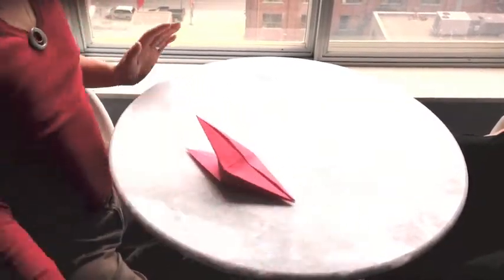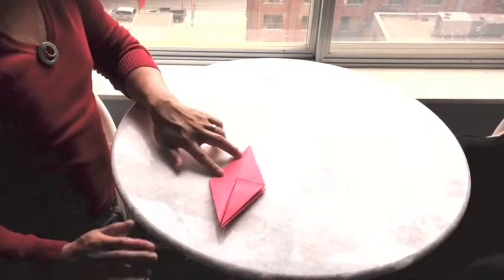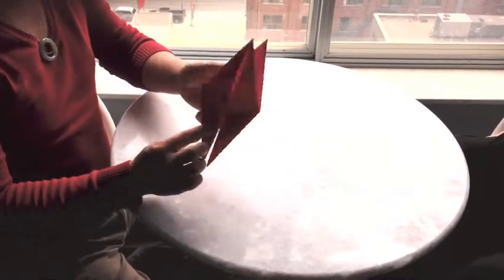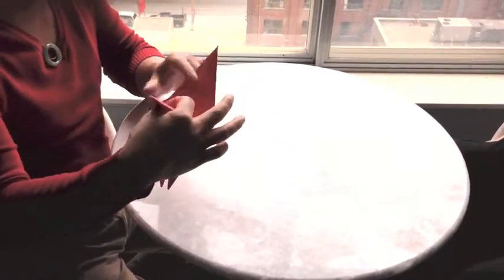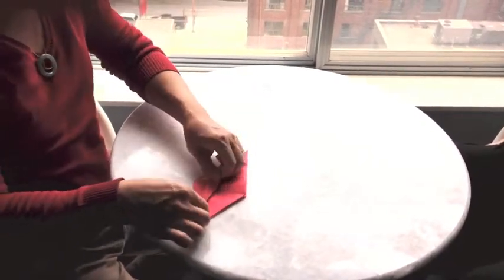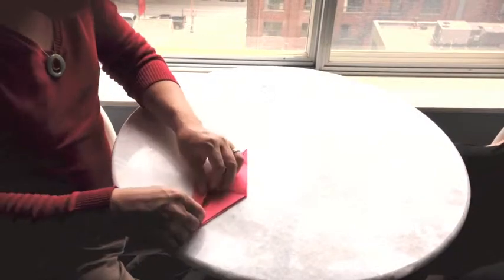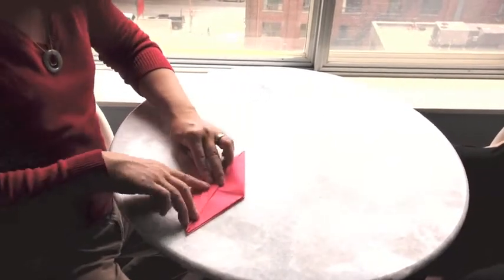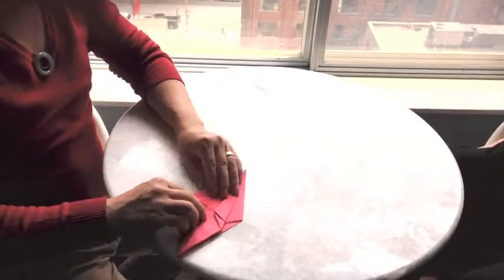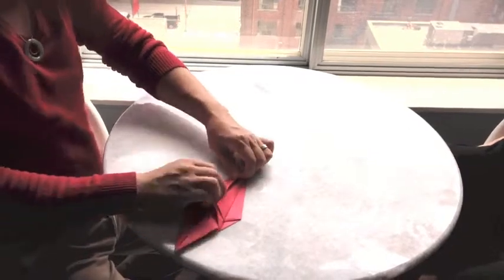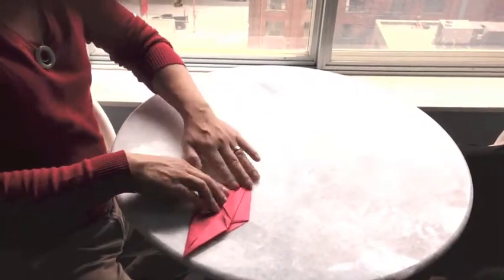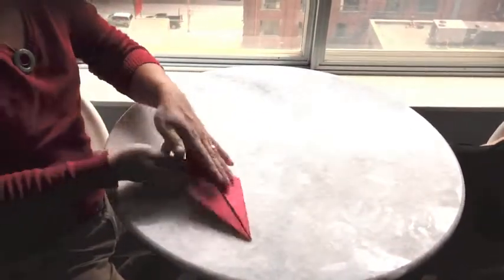Now, so basically you're pretty much there. So now the tip here is the top. You're going to fold this in from the edge. Fold it in, smooth this down, fold this in, smooth this down. So you do the same thing for both sides.